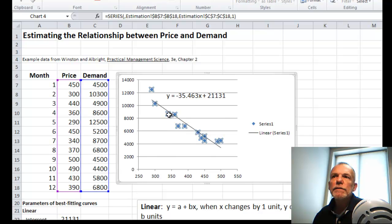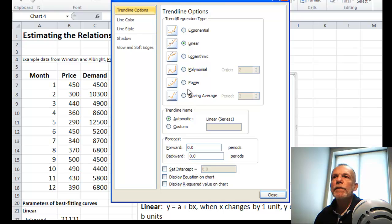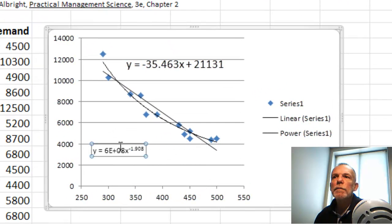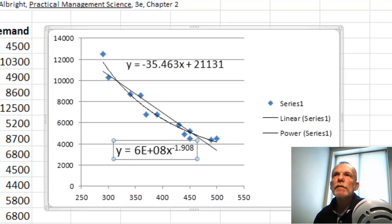I'm going to select the data, right mouse, add trendline. See power curve here. Display the equation on the chart. Close. And now this is my power curve. Let's increase the font size a little bit on that.